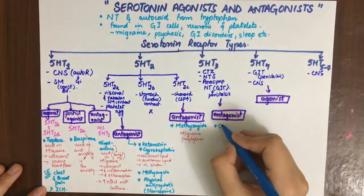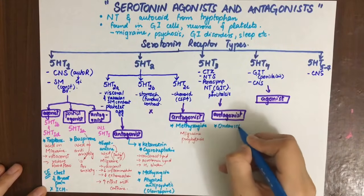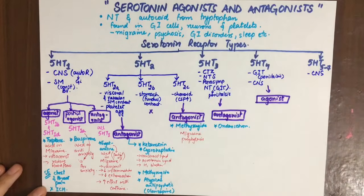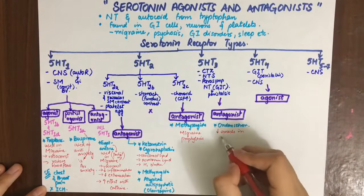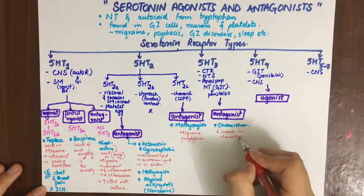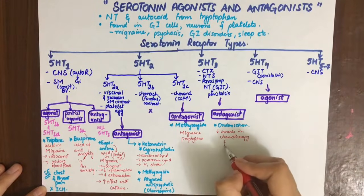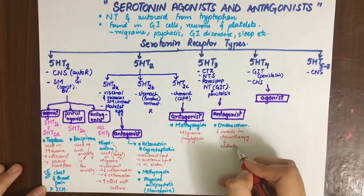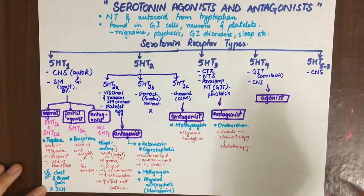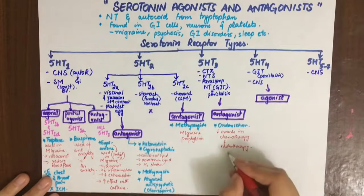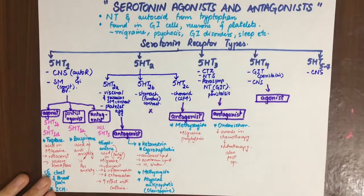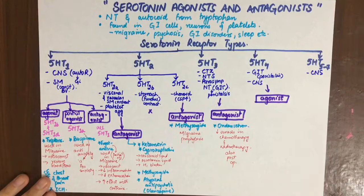The 5-HT3 antagonist is ondansetron. As an antagonist at 5-HT3 receptors, it decreases nausea and vomiting associated with chemotherapy, radiotherapy, and post-operative settings.